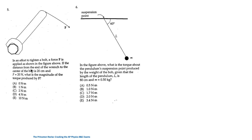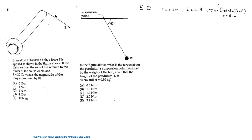For question 5, a force F is applied to tighten a bolt as shown. The distance from the end of the wrench to the center of the bolt is 20 centimeters and F is 20 Newtons. The torque is the cross product R × F. The angle between them is 90°, so the magnitude of torque equals RF. Substituting gives 4 Newton·meters, which is answer D.